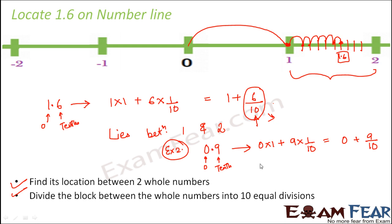That means this number 0.9 lies between 0 and 9 by 10 again is less than 1. So that means it lies somewhere between 0 and 1, somewhere in this region. So what we do, we divide this region into 10 equal parts.